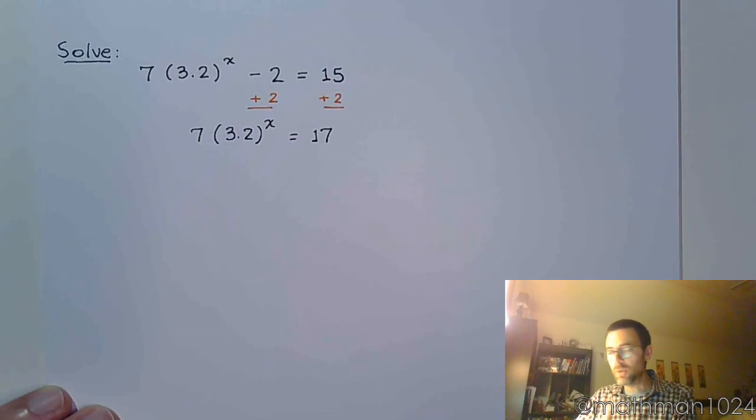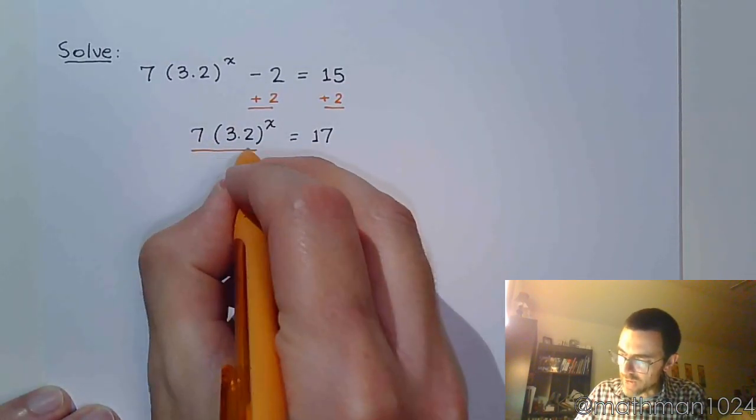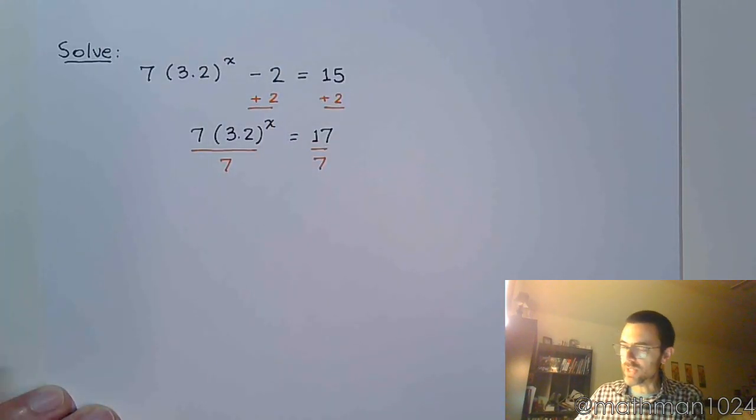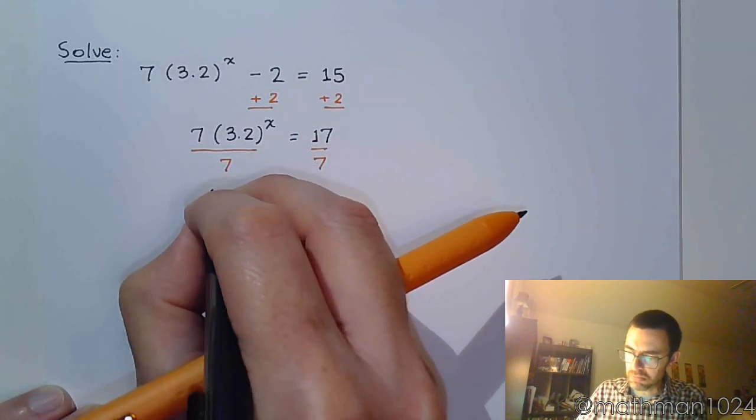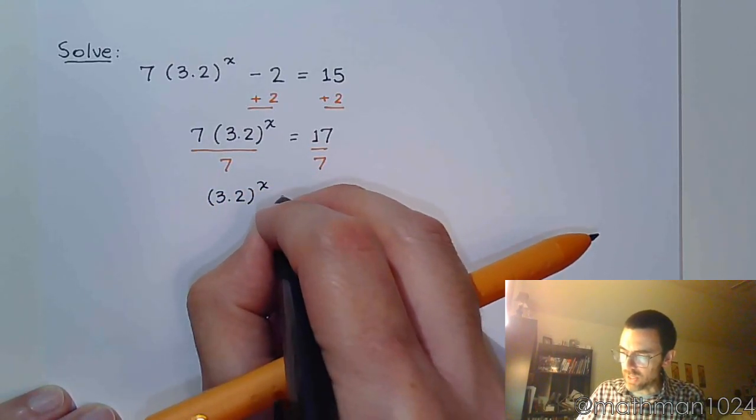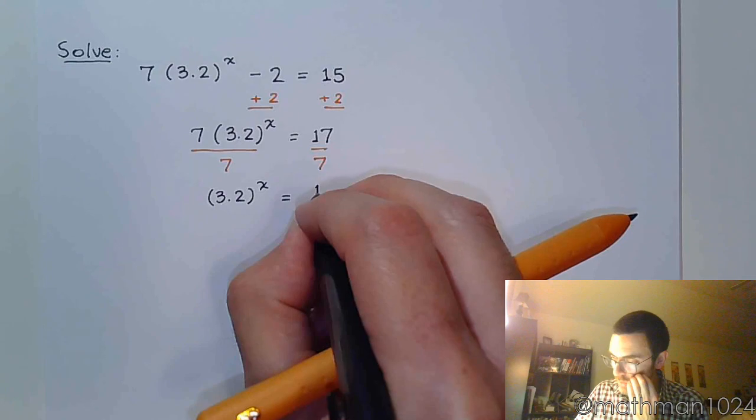Don't take the log of both sides yet. You want to get rid of the factor of 7, so divide both sides by 7. Now, 7 doesn't go into 17 evenly, but it doesn't really matter so much to me because at the end, I'm going to be letting the calculator do all the work.